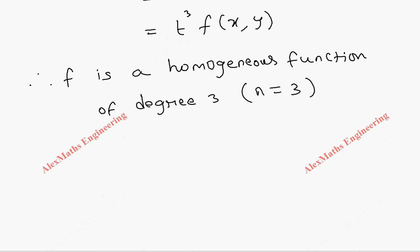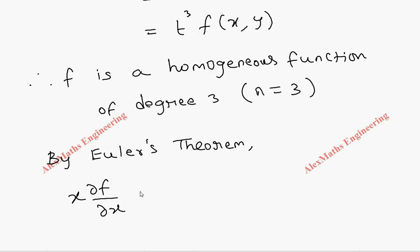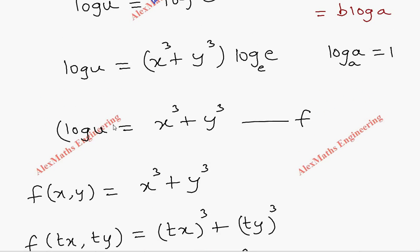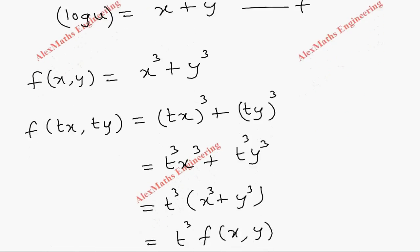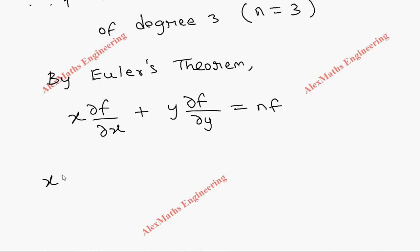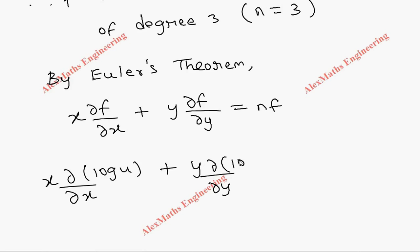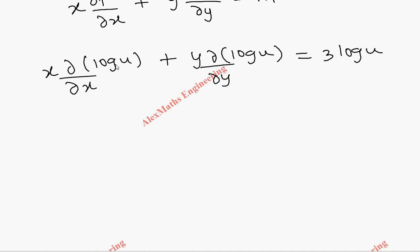Therefore by Euler's theorem: x times ∂f/∂x plus y times ∂f/∂y equals n times f. Since log u equals f, we substitute log u in place of f. So x times ∂/∂x of log u plus y times ∂/∂y of log u equals 3 times log u.